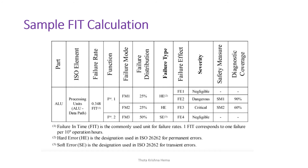Here is a sample FIT calculation shown in the following table. The element considered is ALU — a processing unit — with a FIT value of 0.348. The failure distribution is 25% and 50%, represented as hard error (that is permanent error) and soft error (that is transient or temporary error). We have severities: negligible, dangerous, and critical. The safety measure is identified, and diagnostic coverage for dangerous failures is 90% and for critical is 60%.